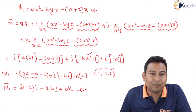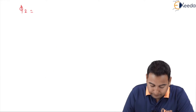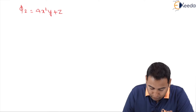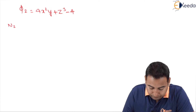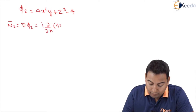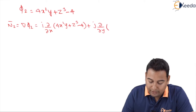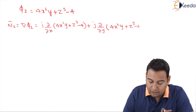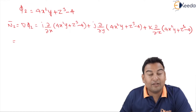The next aim is to find n2 bar. For that purpose we need phi two. Phi two is given as 4x²y + z³ − 4. Taking 4 to the other side, phi two = 4x²y + z³ − 4. Let's find n2 bar = del phi two: i times ∂/∂x of (4x²y + z³ − 4), plus j times ∂/∂y of phi two, plus k times ∂/∂z of phi two.